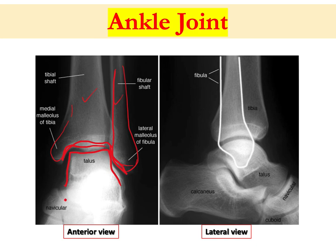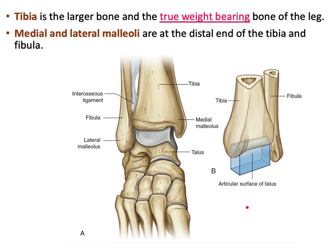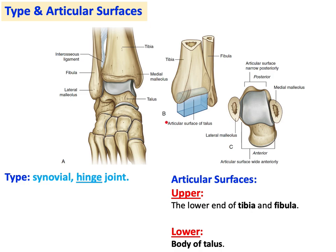The talus articulates with the navicular bone anteriorly. Here you can see the shadow of the fibula, and both bones articulate with the snail-shaped talus. The talus also articulates with the calcaneus and with the navicular bone anteriorly. The tibia is the most important bone in the leg — the largest and the true weight-bearing bone. It has a medial malleolus, and laterally the fibula has a lateral malleolus; both articulate with the talus.